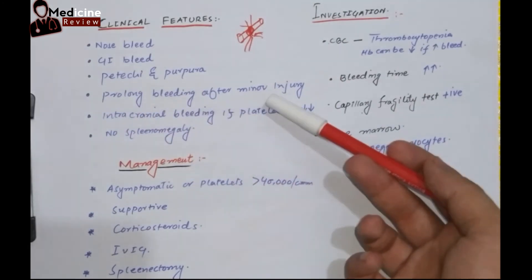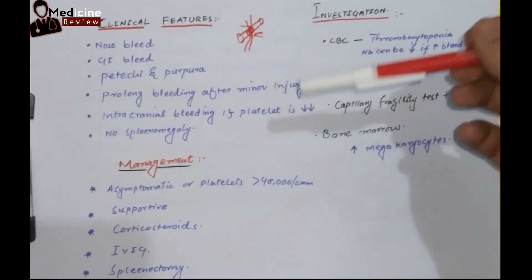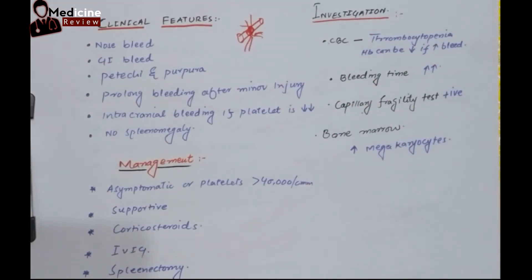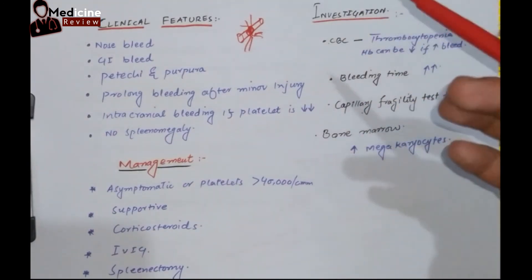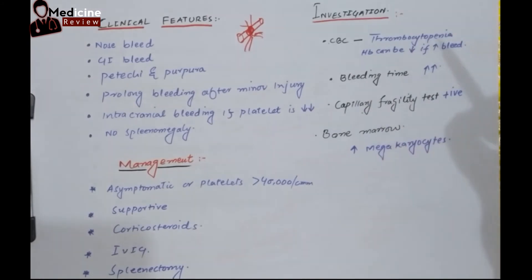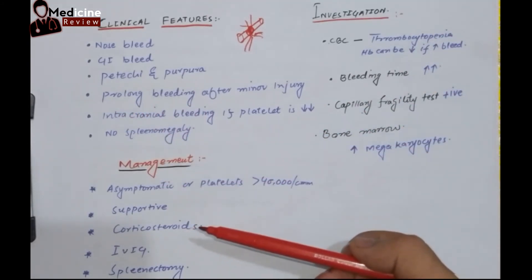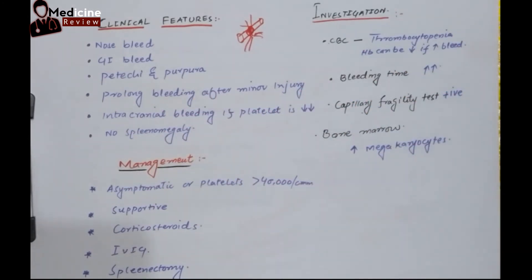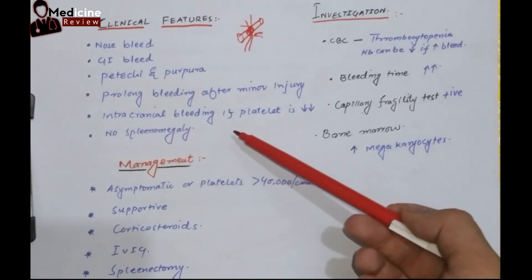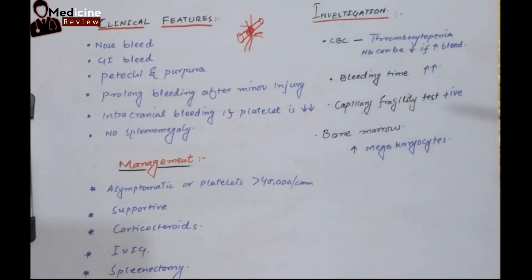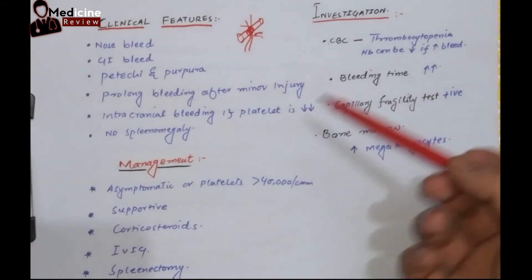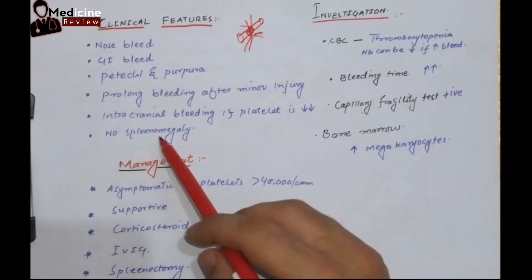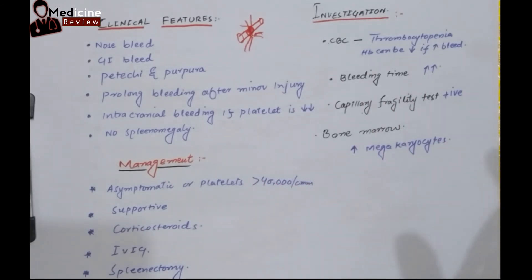There will be prolonged bleeding after a minor injury because platelets cannot aggregate to stop the bleeding. If the platelet count is severely decreased — for example, less than 10,000 — there can even be spontaneous intracranial hemorrhage, which can be very lethal. One very important point is that there is no splenomegaly; the spleen must be normal in ITP.